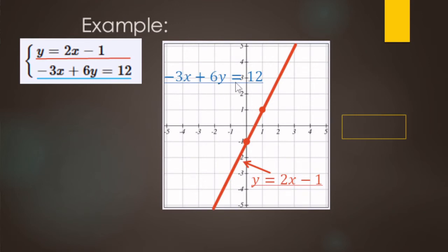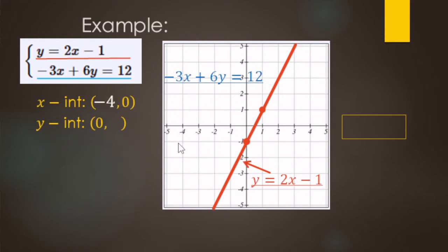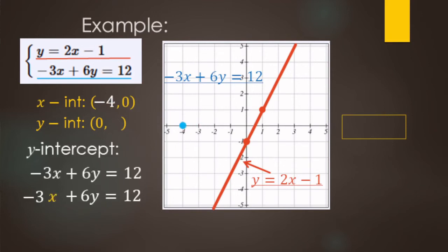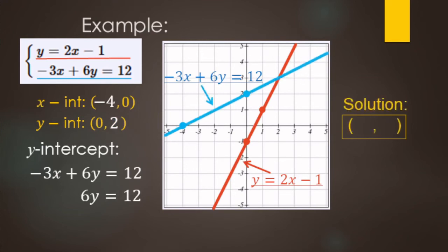The second equation is in standard form — x, then y, then the equal sign — so our graphing strategy is different: we graph by intercepts. For the x-intercept, divide 12 by negative 3, giving negative 4. For the y-intercept, when x = 0, the x-term drops out, so we divide 12 by 6, giving 2. Plot both intercepts on the graph and draw the line.